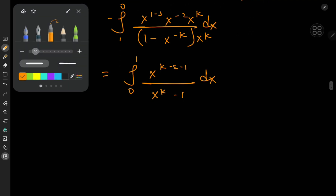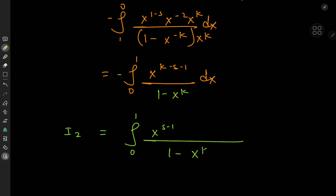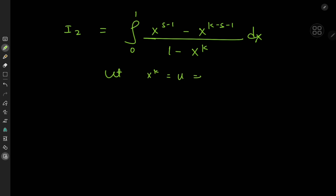So I sub 2 equals a sum of two integrals over 0 to 1, which we combine using linearity of integration. Keeping a negative sign so the denominator is 1 minus x to the k, we have the common denominator 1 minus x to the k, with x to the s minus 1 minus x to the k minus s minus 1 upstairs, integrating with respect to x. Now we need one more substitution: let x to the k equal u, which implies dx equals 1 over k times u to the 1 over k minus 1, du.